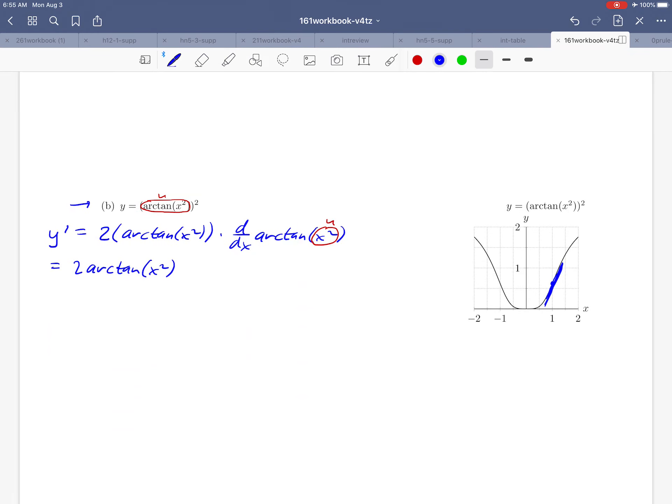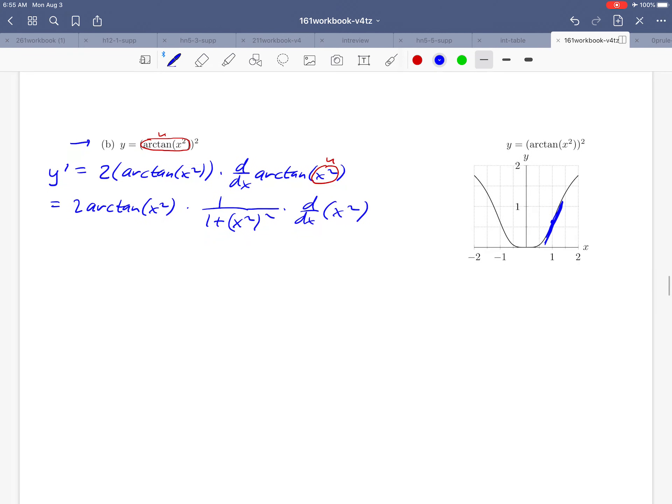Sorry for the scrolling here. So 1 over 1 plus u squared is going to look like 1 over 1 plus x squared squared. And then the second piece of the chain rule is to take the derivative of just the u part.